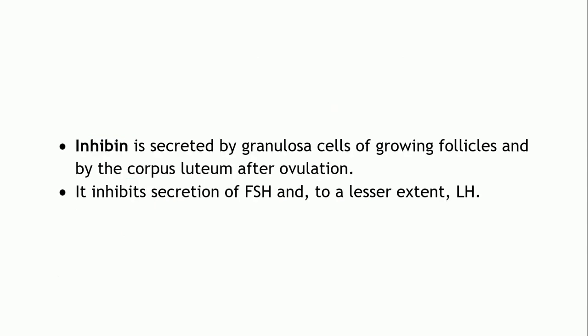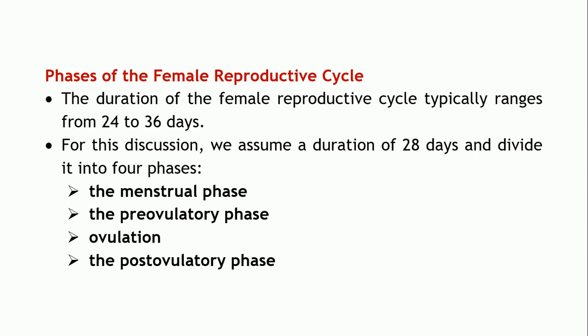The fourth hormone is inhibin, secreted by the granulosa cells of the growing follicles and by the corpus luteum after ovulation. As the name implies, the role of inhibin is to inhibit the secretion of FSH and, to a lesser extent, LH. So inhibin is responsible for decreasing the levels of FSH primarily, and also LH to a lesser extent. This is to do with the hormonal regulation and the roles of the different female sex hormones.